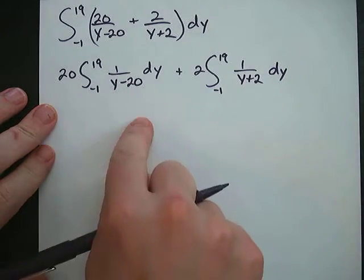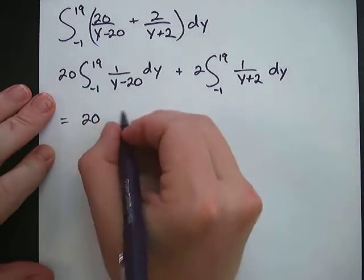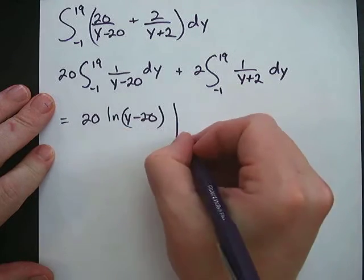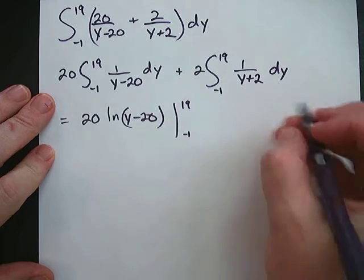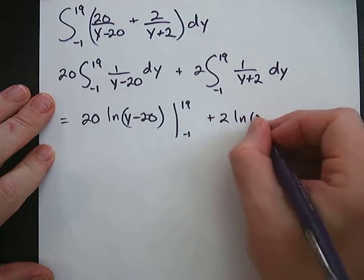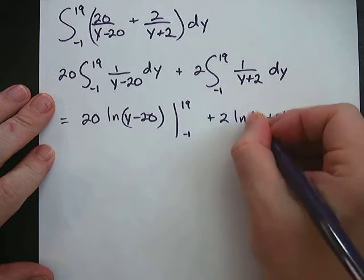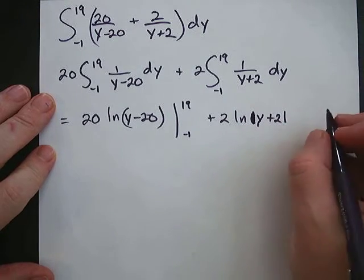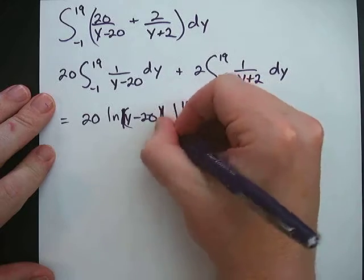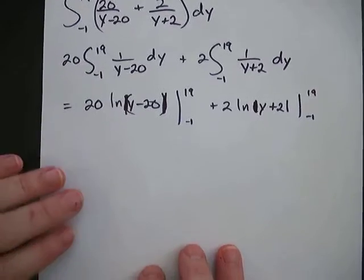Integrating, we get 20 times ln of the absolute value of (y minus 20), plus 2 times ln of the absolute value of (y plus 2). The absolute values are important here. This expression is evaluated from negative 1 to 19.